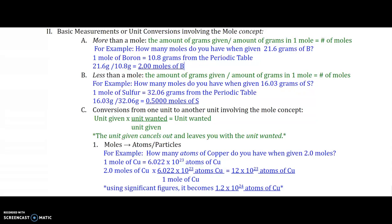Then, when you're doing a calculation that is going to be less than a mole on letter B, it says, how many moles do you have when you're given 16.03 grams of sulfur? Well, I know from my periodic table that there are 32.06 grams of sulfur in every one mole of sulfur. Therefore, I will take my numerator, my given, and divide it by the atomic mass of my element of sulfur, which is 32.06, and I will get 0.5 moles of sulfur.